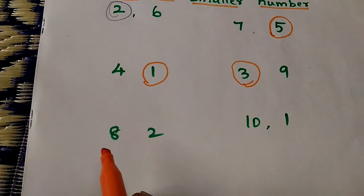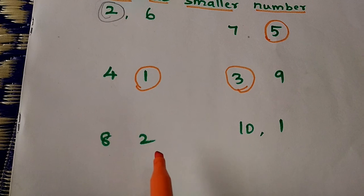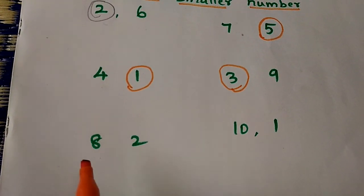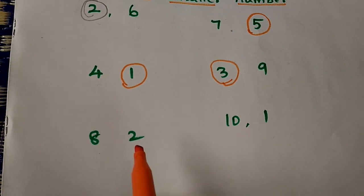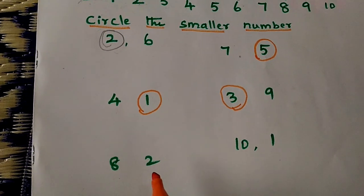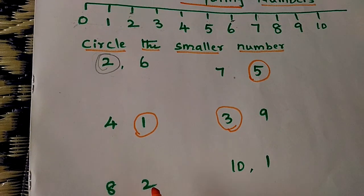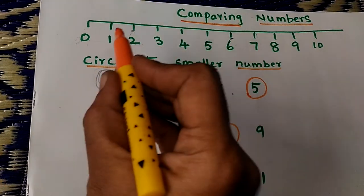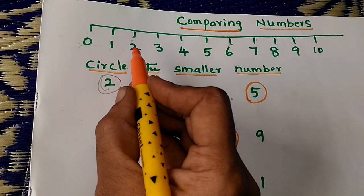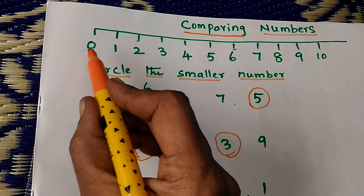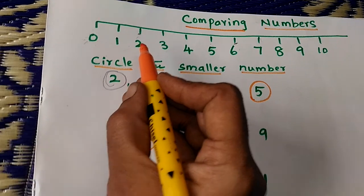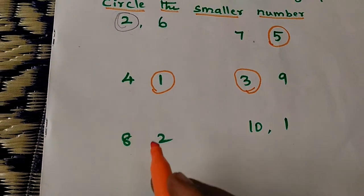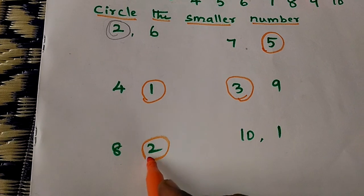Then we have 8 and 2. Which one is the smaller number — 8 or 2? Where is 8? Find out where is 8. Here. Where is 2? Here. 2 is closer to 0, so 2 is smaller than 8. 2 is the small number.